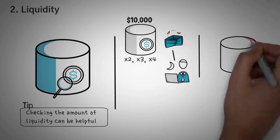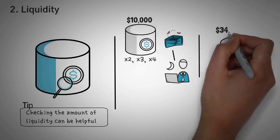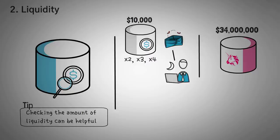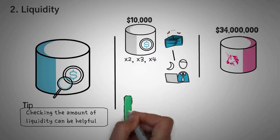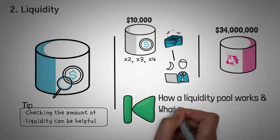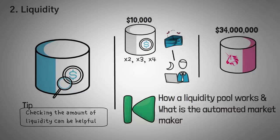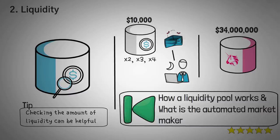On the other hand, a token like Uniswap actually has around $34 million in liquidity. And if you're new around here, liquidity refers to the amount of value in tokens that can actually be traded. Check out our video on how a liquidity pool works and what the automated market maker algorithms are if you want to be a liquidity expert by only watching two videos. In fact, they're actually our best videos, and probably because they're so awesome.